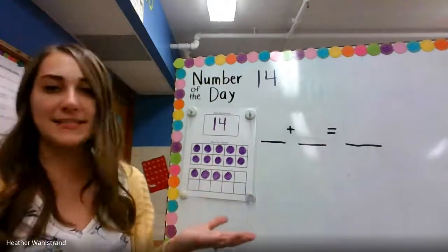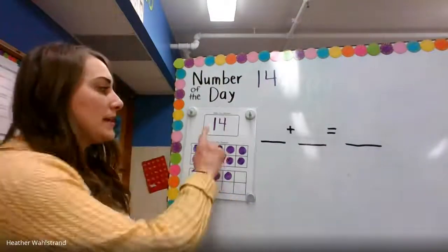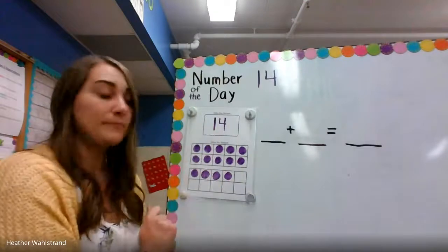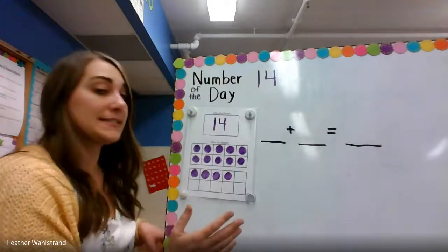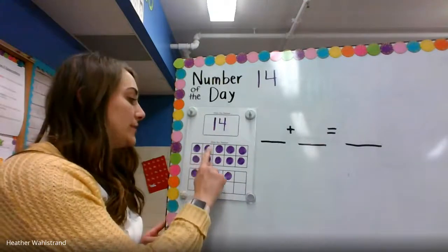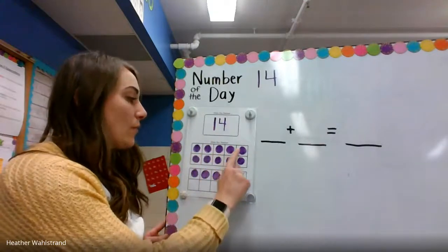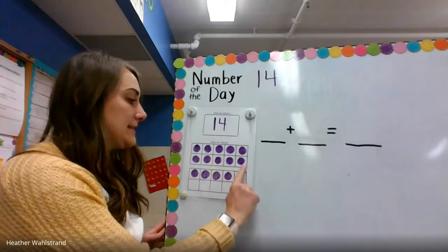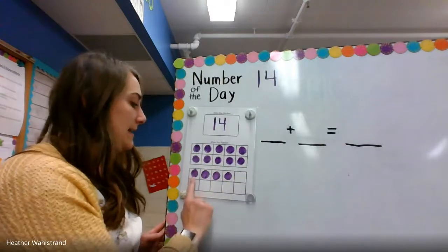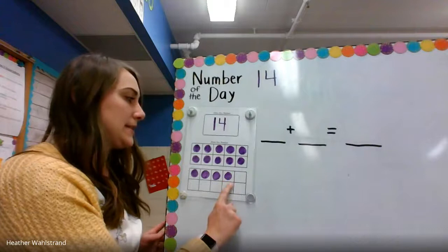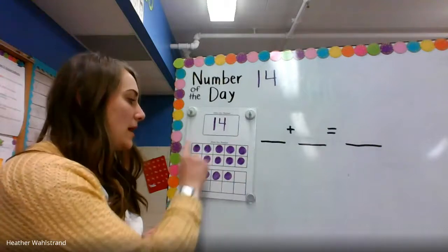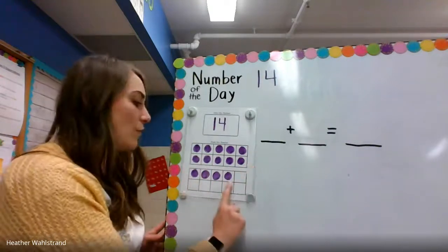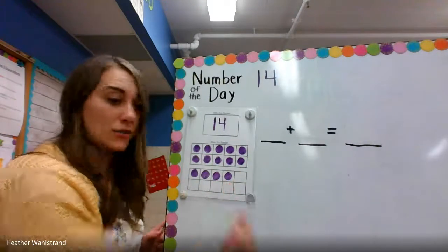Let's count 14 on our tens frame. Here's our number 14, a one and a four. Let's count 14: 1, 2, 3, 4, 5, 6, 7, 8, 9, 10, 11, 12, 13, 14. We have our group of 10 and four extra ones.